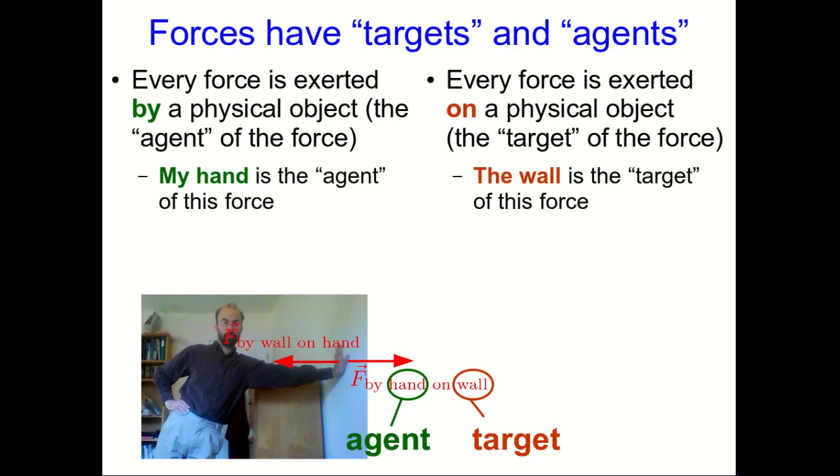But now if you look at the partner of this force, the other force that's part of this interaction, which is the force by the wall on my hand. Now the wall is the agent of this force, and my hand is the target. So the agent and target get swapped when you go from one force to its partner, which is the other force in the same interaction.